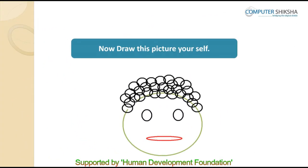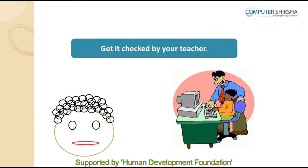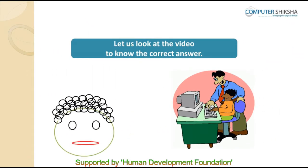Look at the pictures. Since you have all made these pictures earlier, it should not be difficult for you to see the picture and make it on your own. All students start making the picture and after you are done, show it to your teacher. If you are not able to make these pictures, then watch the videos again and learn how to make them, then show them to your teacher.